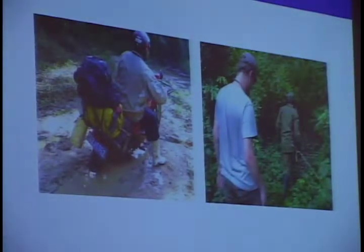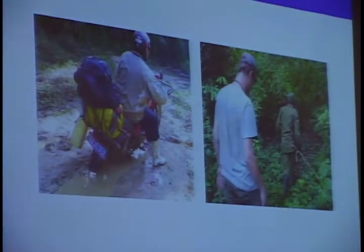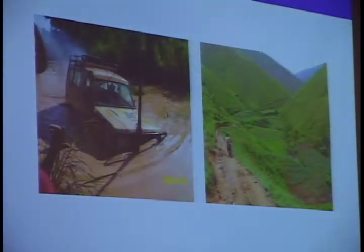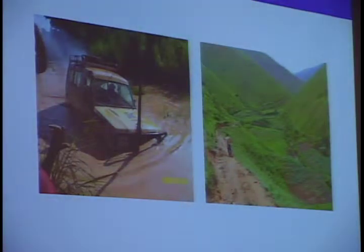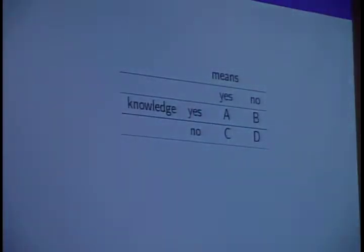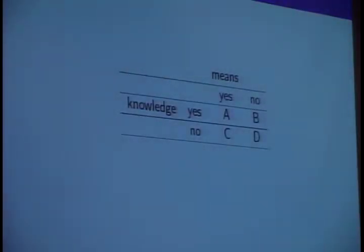It sounds great, but in the Congo that's very unlikely to work for several reasons. The field realities are that places are very isolated. Let's say the population consists of four different groups. We have one column with knowledge — people that would know about that cell phone if you had a crowdsourcing project — and the means — people that, if they know about it, can also send a text message, having a cell phone and phone credit.